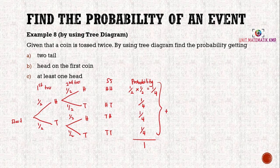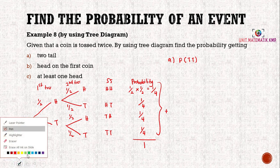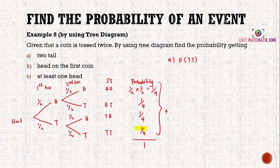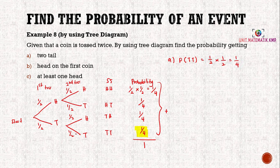For part a, the probability of getting two tails means we look for TT. From the tree diagram, the probability is one over four — that is, one over two times one over two equals one over four. We multiply along the branch.